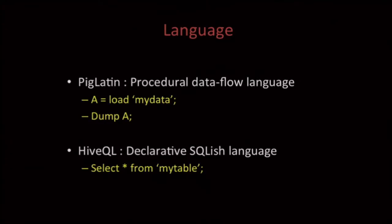But they are different, and the difference is from the outside. If you look at these systems from the end-user perspective, the users deal with the language, and the language is very different. Pig comes with this PigLatin language, which is a procedural and dataflow language, whereas Hive is a more declarative and SQL-like language. Here is a Hello World example for both of these systems to print out the rows — they look different.